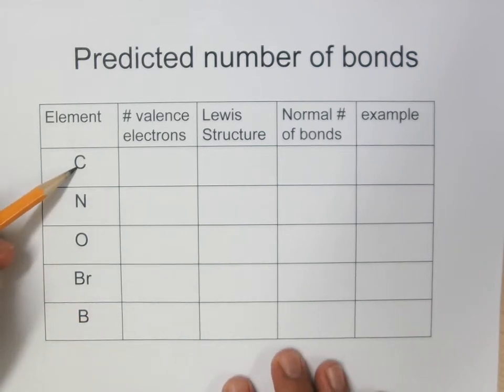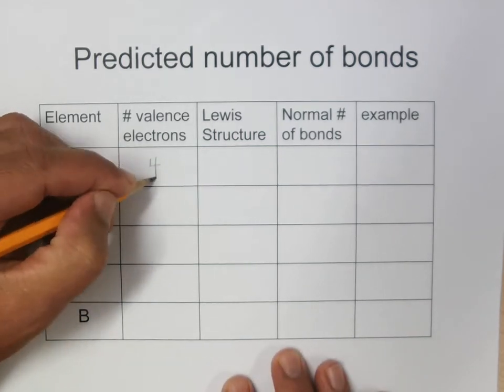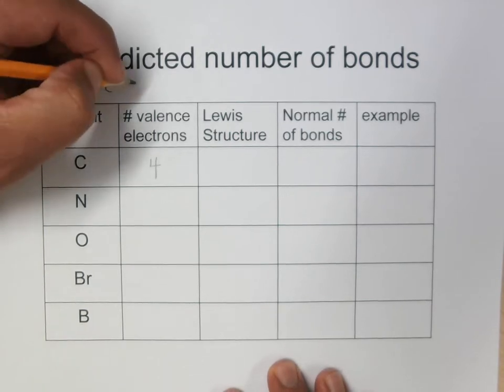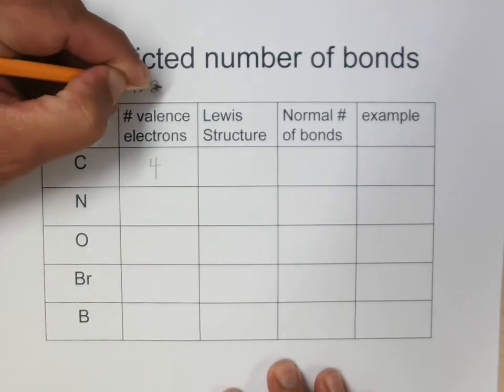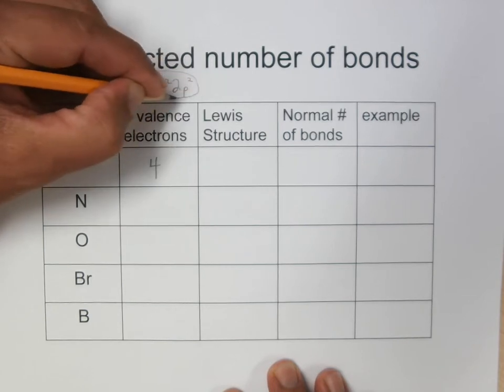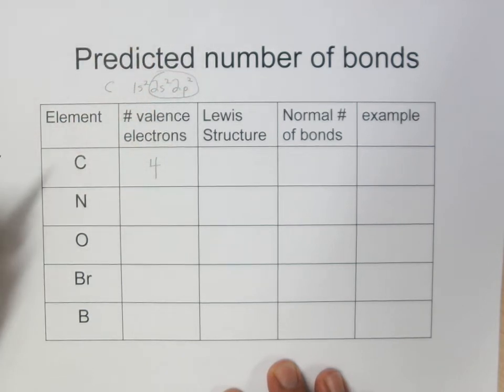What that means is if we look at a set of nonmetals, we can see from the Lewis structure of the atom and the number of valence electrons how many bonds it might form, and then we can write some examples. So for carbon, it has four valence electrons, and you can get the number of valence electrons by writing out the electron configuration. So for instance, carbon would be 1s2, 2s2, 2p2. So there's your four valence electrons.